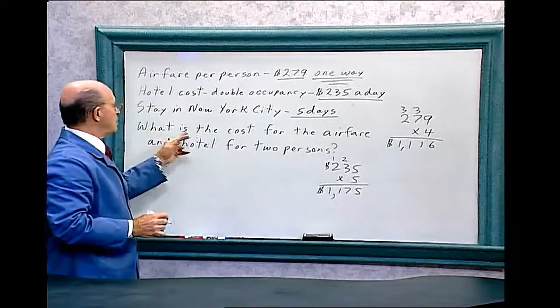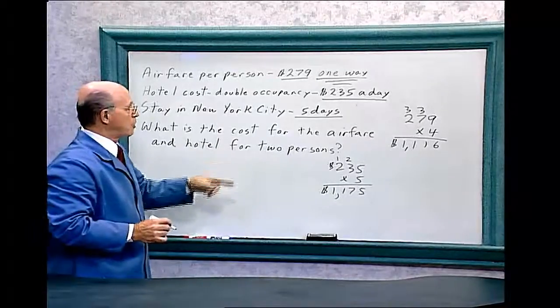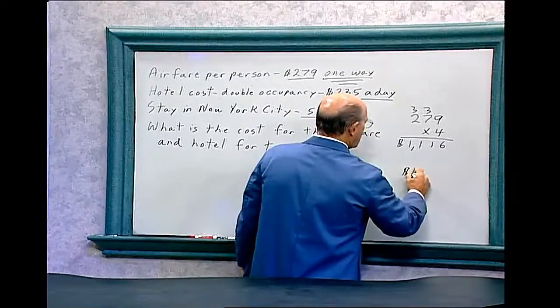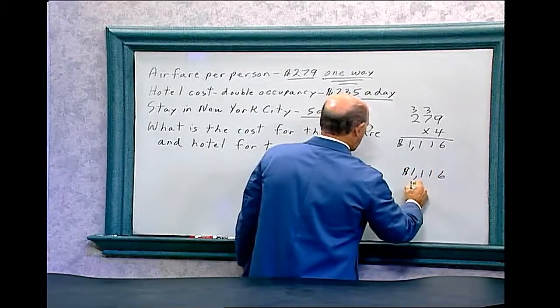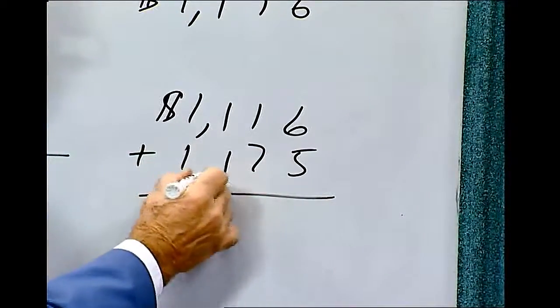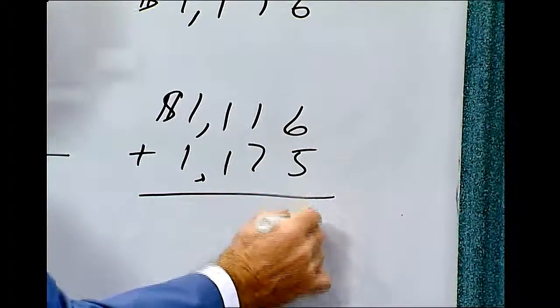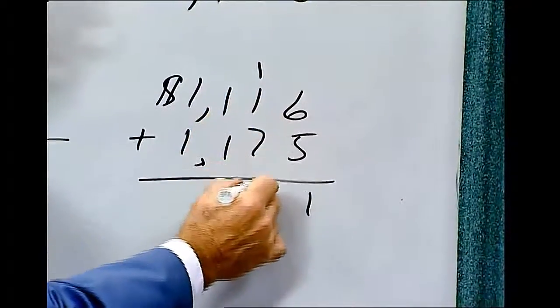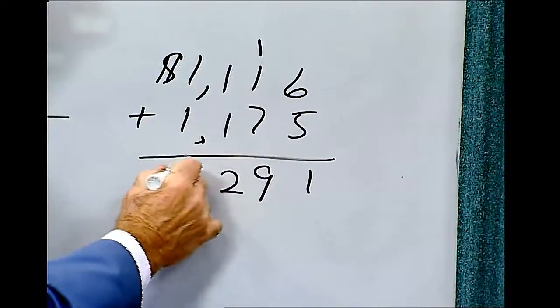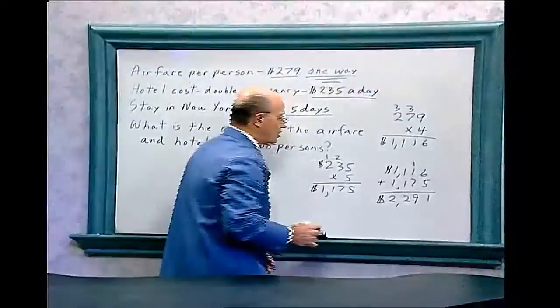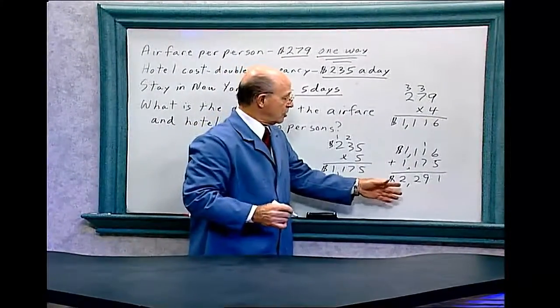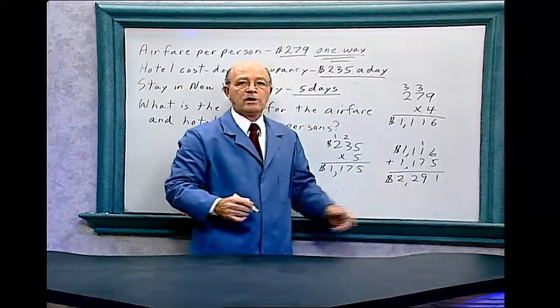The question is, what is the cost for the airfare and hotel for two persons? So we have to add these two amounts together: $1,116 and $1,175. Five plus six is 11. One plus one is two, plus seven is nine. One plus one is two. One plus one is two. So to stay in New York City for five days at the hotel, including the airfare, costs $2,291.